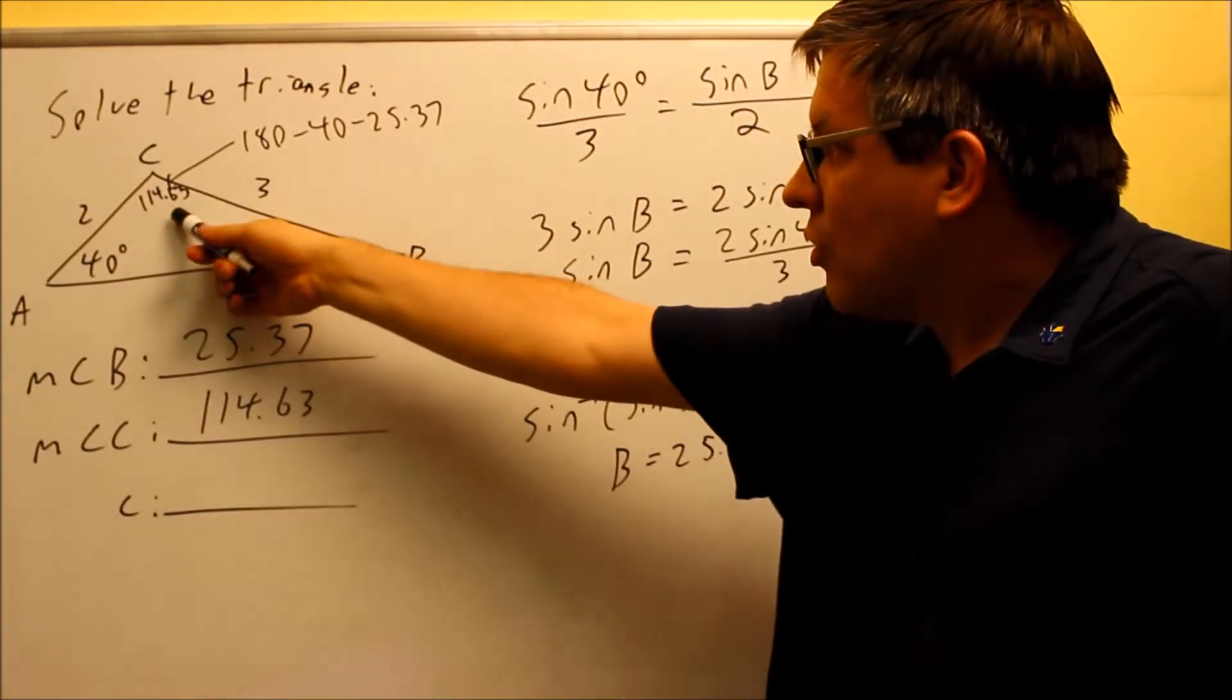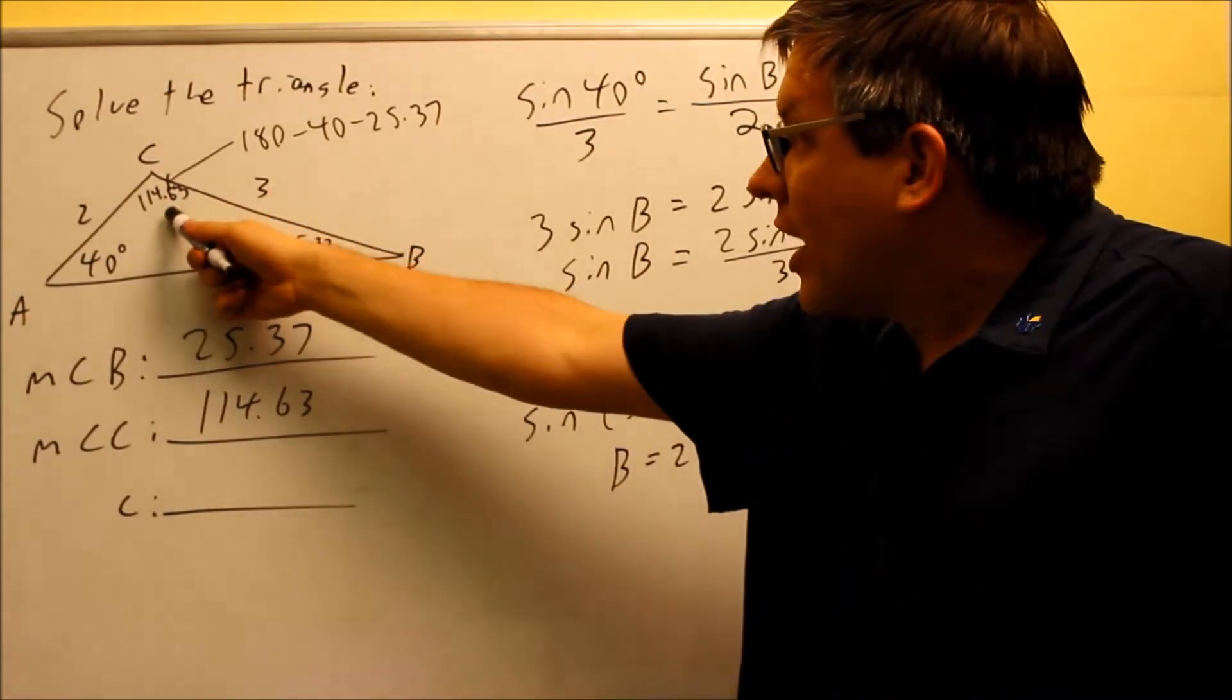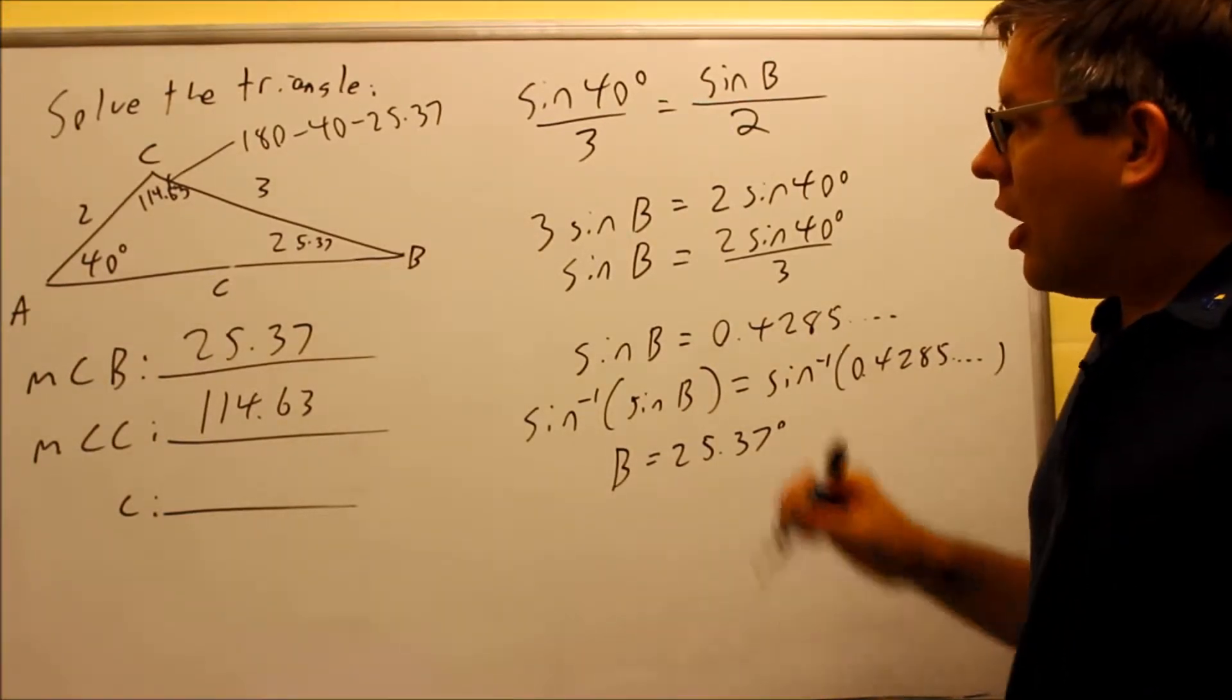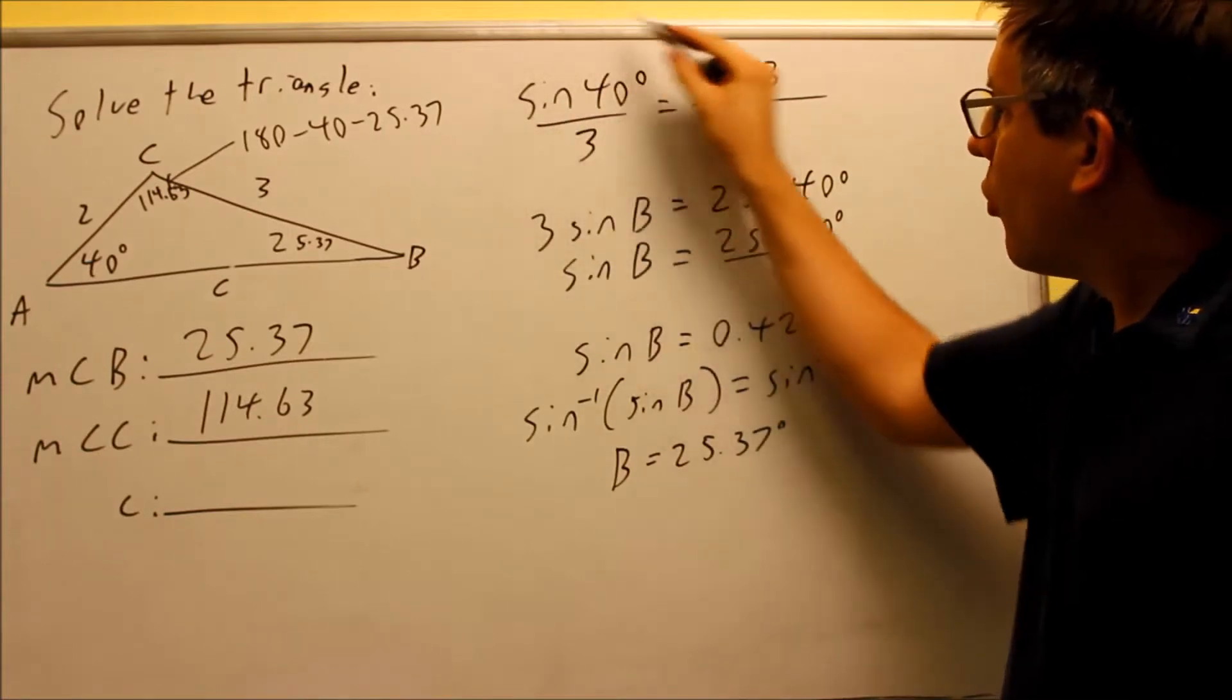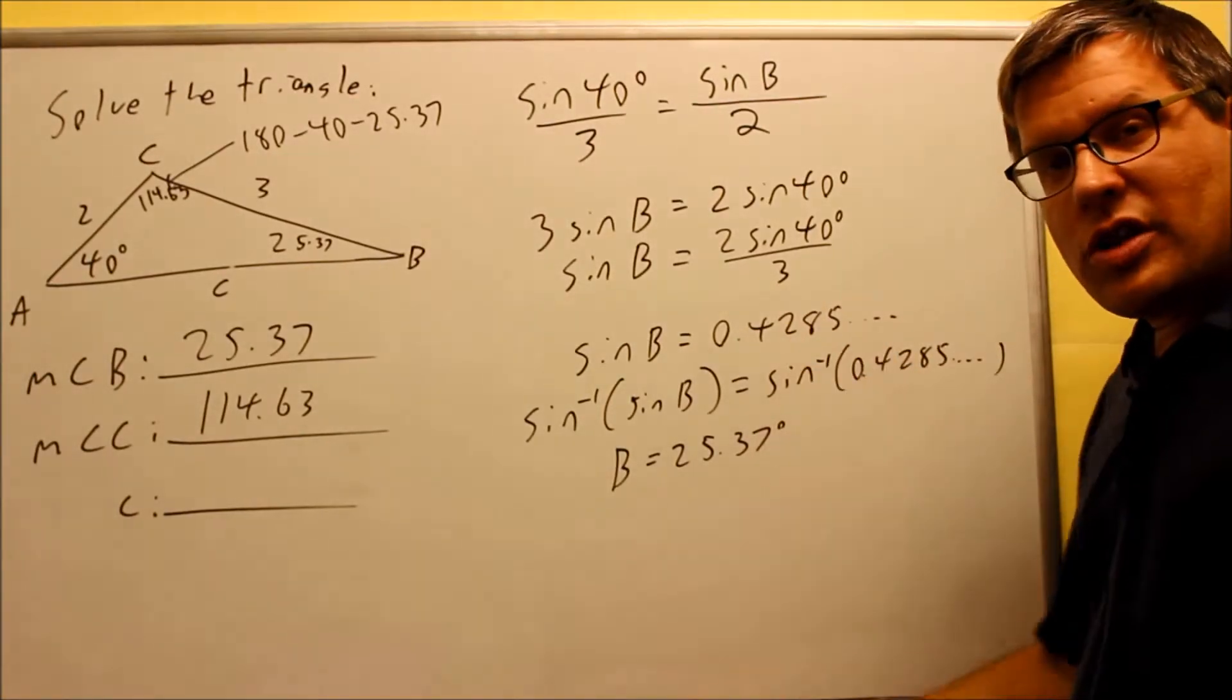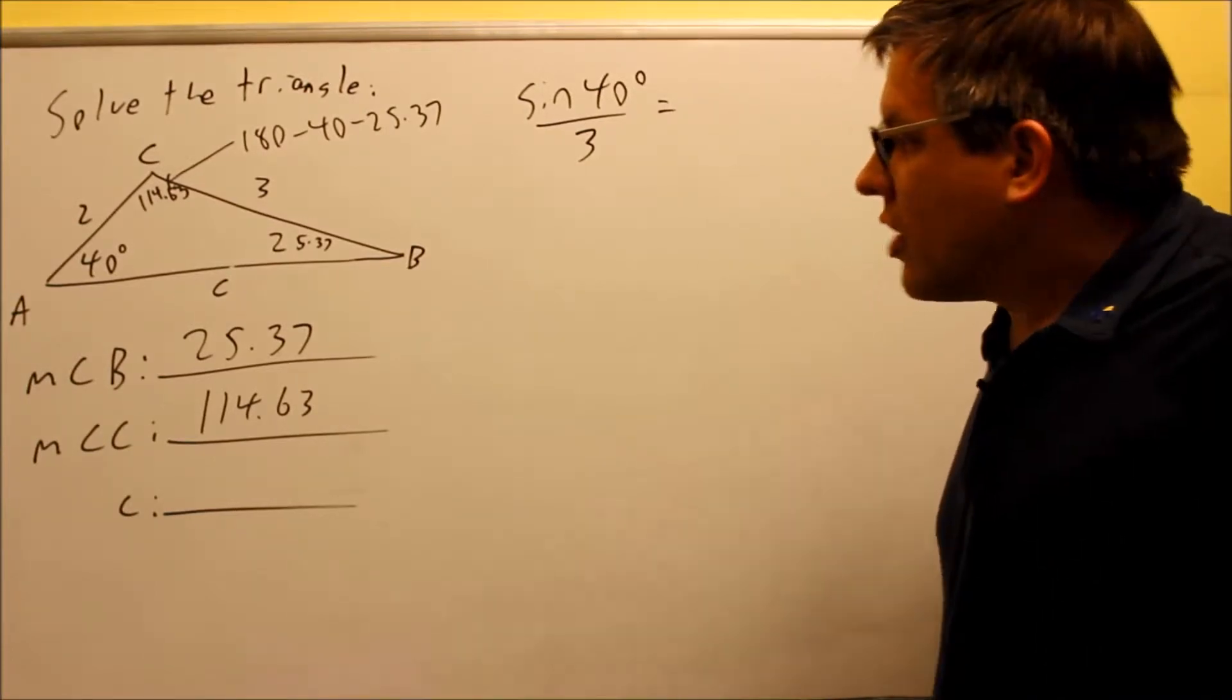We want to find out this angle because we need that in order to solve for side C. You always want to have the angle provided opposite the side you're trying to solve for. So that's going to be our next step. We have to set up another proportion. We're still going to start with sine 40 over 3, but this time we're going to use angle C. We're going to erase this so we can do the next one to solve for side C.